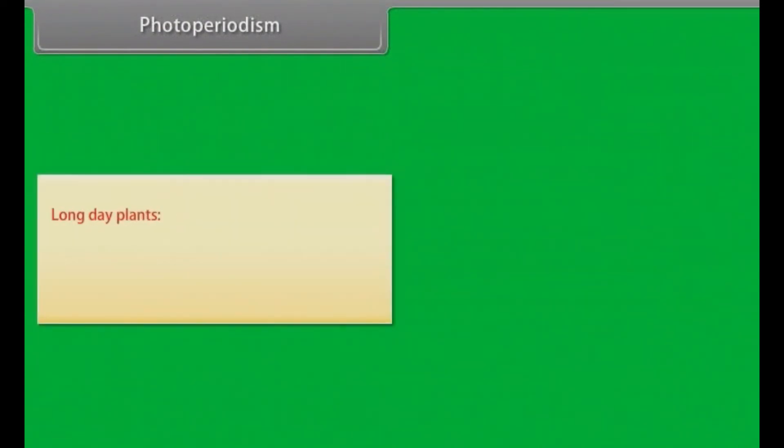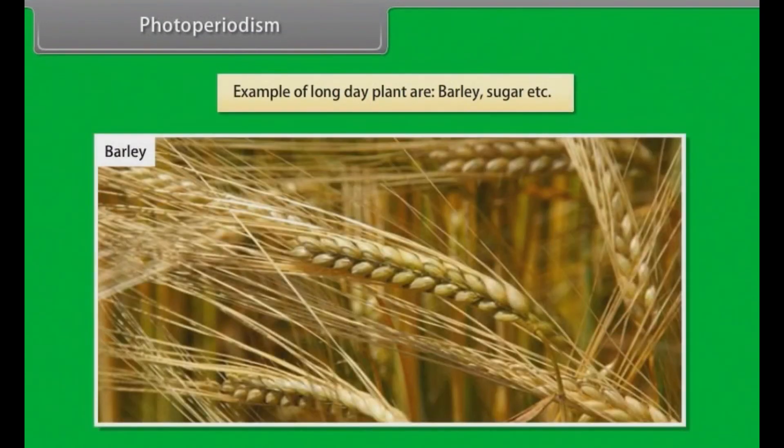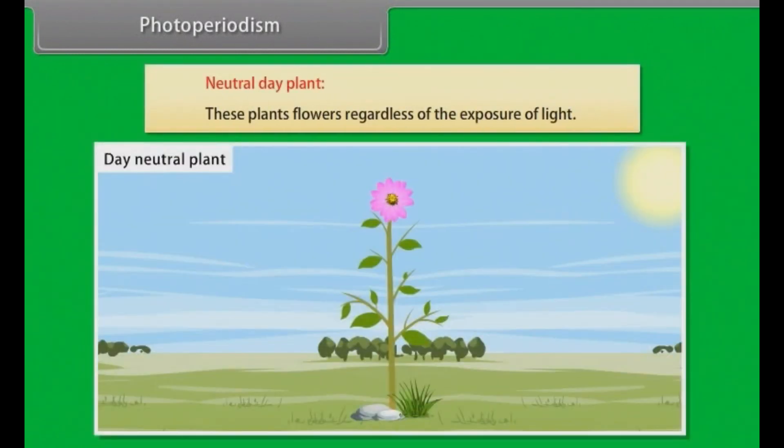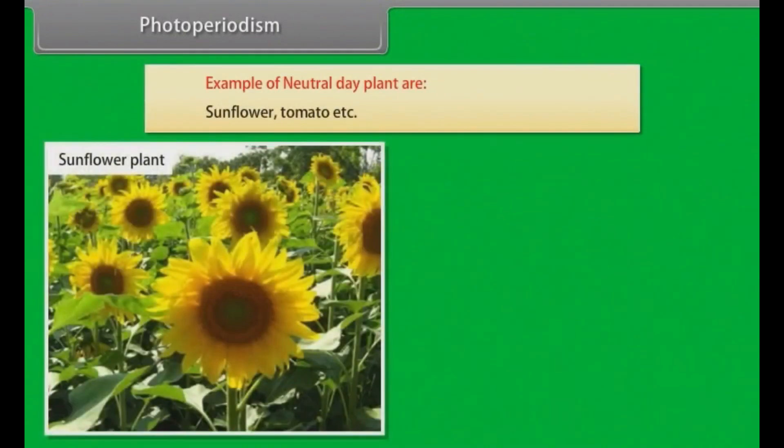Long day plants: These plants induce flowering when day length exceeds critical day length. Examples of long day plants are Barley, sugar beet etc. Neutral day plants: These plants flower regardless of the exposure of light. Examples of neutral day plants are Sunflower, tomato etc.